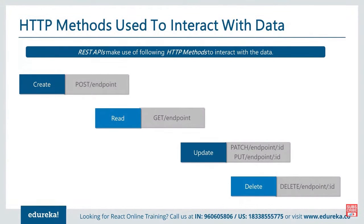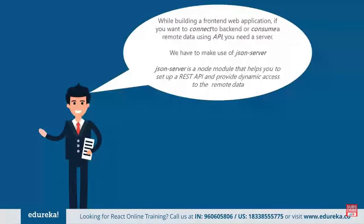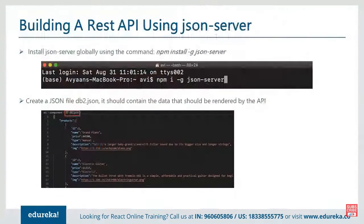We do four operations over an API: Create, Read, Update, and Delete. Create is when you want to insert a new record, Read is when you want to get the record, Update is when you want to update a record, and Delete is delete. So ultimately we have four different ways to call it. JSON Server is a Node module that helps set up a REST API and provides dynamic access to remote data.